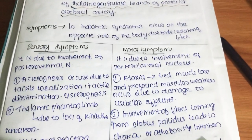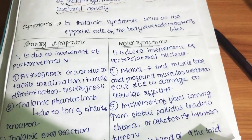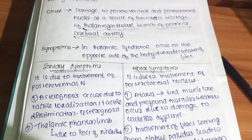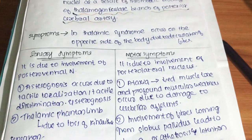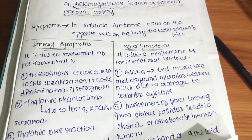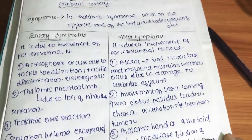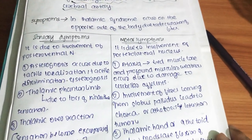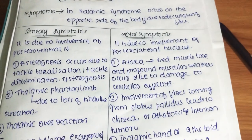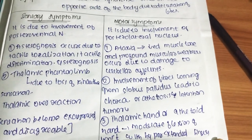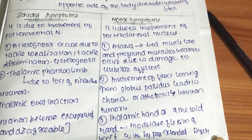The second motor symptom is chorea or athetosis. Chorea involves quick, involuntary movements, while athetosis involves slow, twisted movements. These result from involvement of the fibers passing through the posterolateral nucleus.